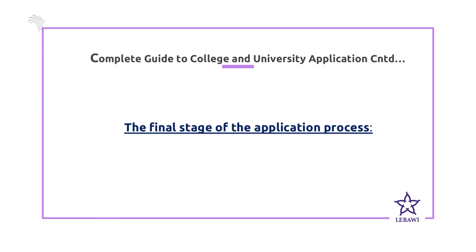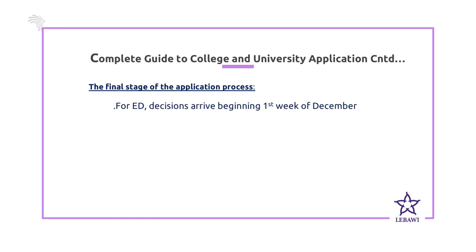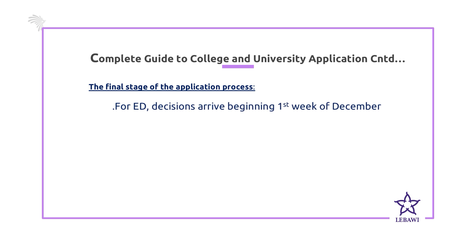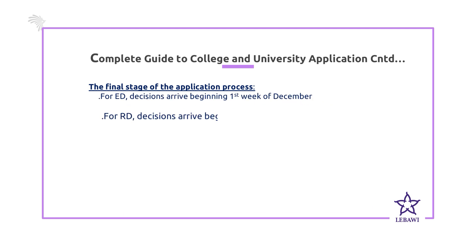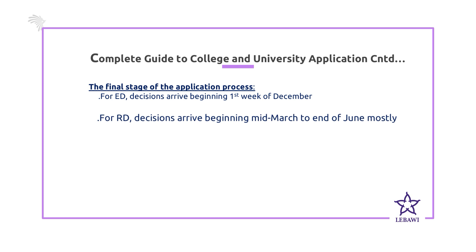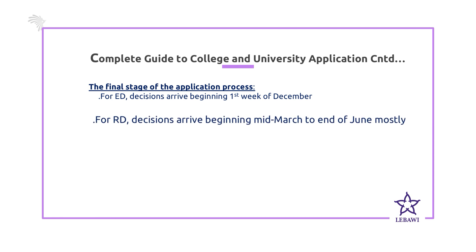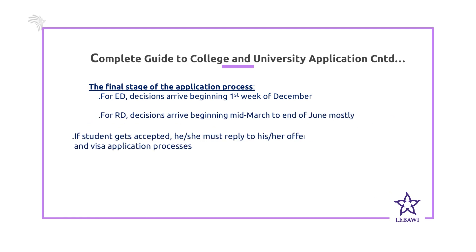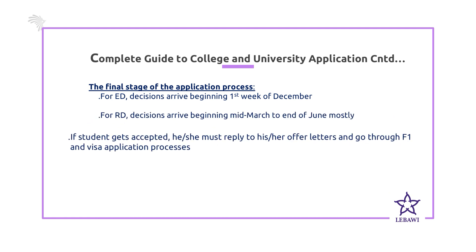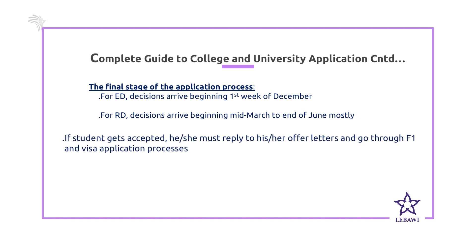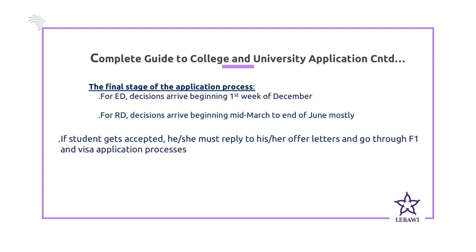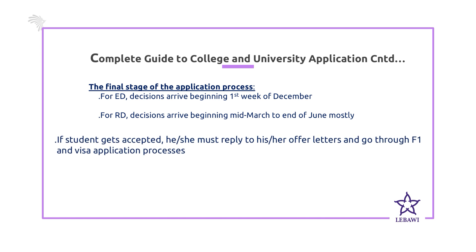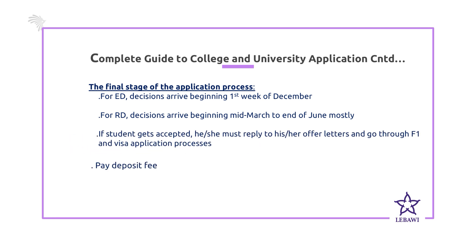The final stage of the application process: for early decision applicants, decisions start coming in the first week of December. For regular decisions, the decision starts arriving somewhere between mid-March and end of June. If a student gets accepted, he or she must reply to the offer letter and go through the F-1 visa application process, and finally pay a deposit fee.